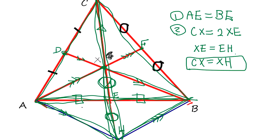So everything is proven very cleanly here using the triangle midpoint theorem. This point is going to divide — if you connect from C to X — that's going to divide the bottom line into equal lengths.